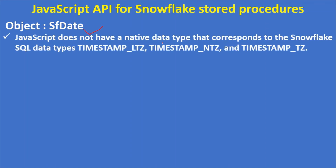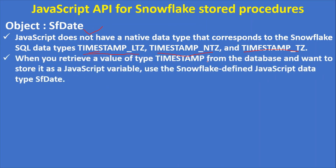The last object is SFDate. JavaScript doesn't have a native data type that corresponds to Snowflake SQL data types like TIMESTAMP_LTZ, TIMESTAMP_NTZ, and TIMESTAMP_TZ. For some other data types like number and string, there are equivalent JavaScript data types, but for these three timestamp types there is no native JavaScript equivalent. Hence Snowflake provides the SFDate object, so when you retrieve a timestamp value from your database and want to store it as a JavaScript variable, you use the Snowflake-defined SFDate object.